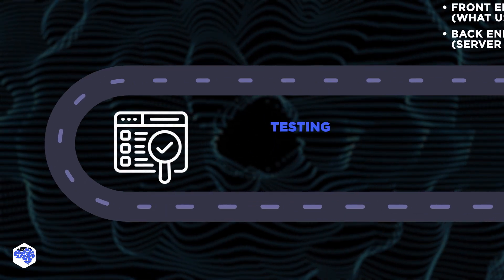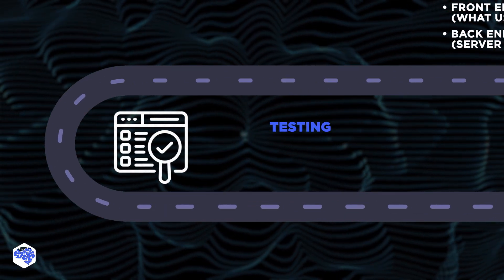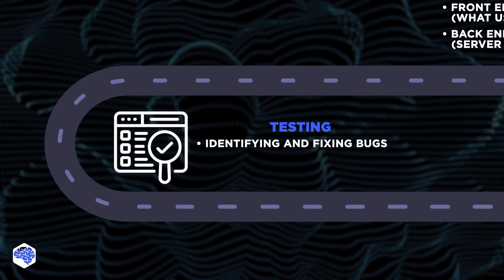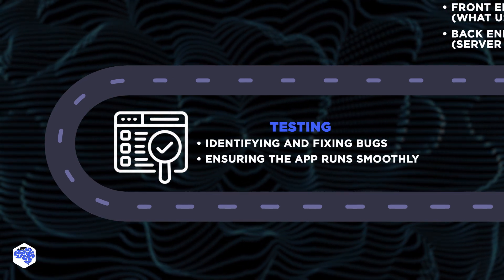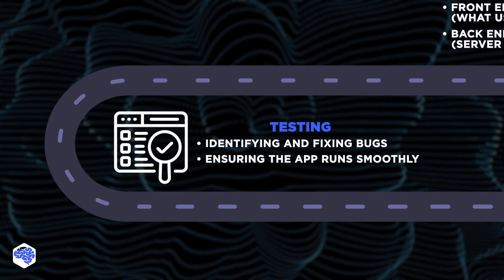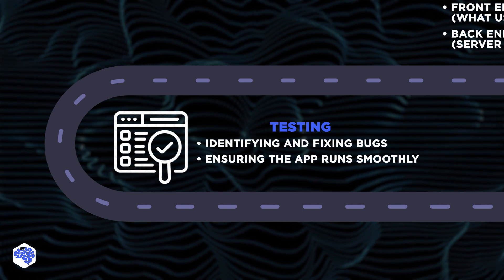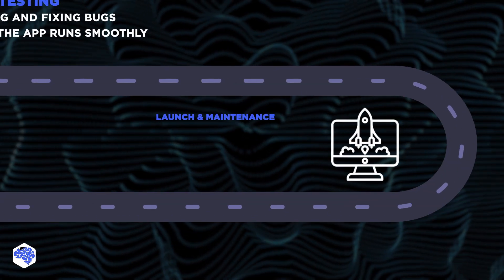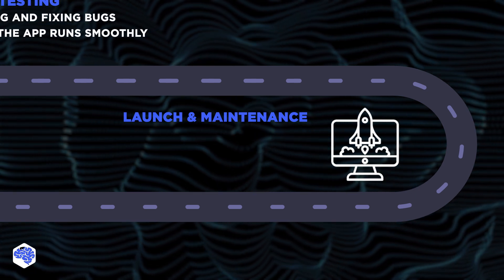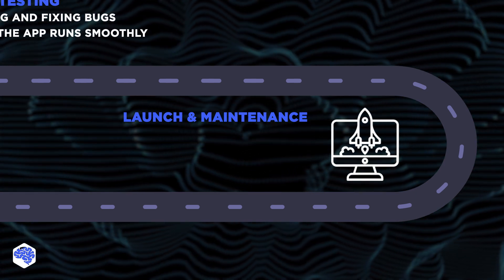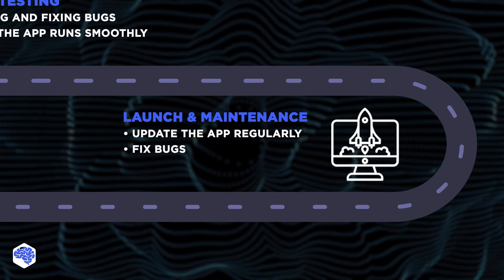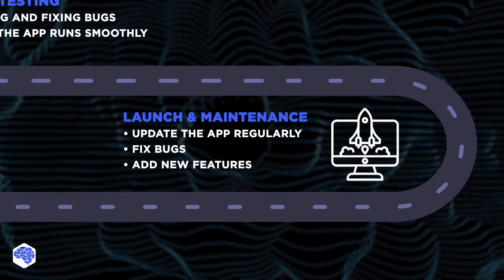Now, testing: this stage ensures your app is ready for the market. Your QA engineer will identify and fix any bugs and ensure that the app runs smoothly across different devices. The result is an app that is market-ready and bug-free. And finally, launch and maintenance: once your app is live in app stores, the work doesn't end there. You must update your app regularly, fix those bugs, and add new features based on your user feedback.